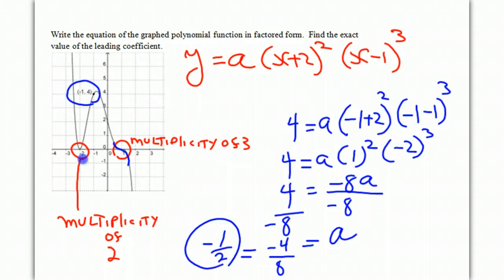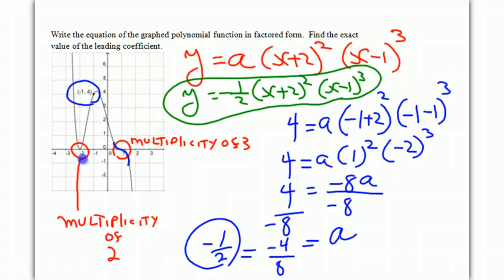And now we know what our final equation is going to be. And we'll write it up here in green. We get y equals negative 1 half times x plus 2 squared times x minus 1 cubed. And that is our answer.